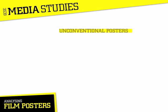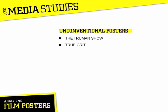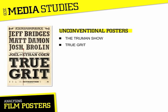Sometimes posters can break with convention to make themselves more appealing. When media texts do this, we say they are unconventional. This poster for The Truman Show dropped many of the conventions you would normally expect to see and focused on the main image of Jim Carrey's character, which is made up of hundreds of tiny images from the film itself. The True Grit poster did not use a main image and instead copied the style of a Wild West wanted poster to give clues about its genre and content.